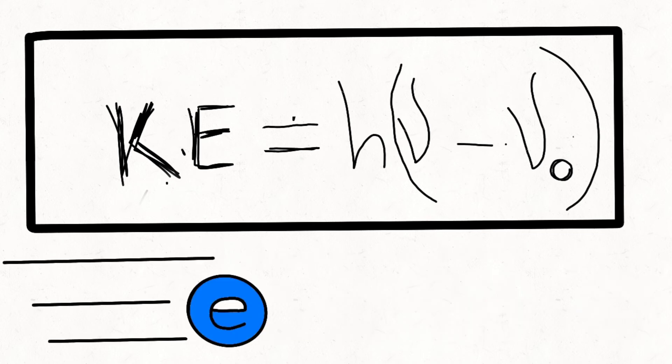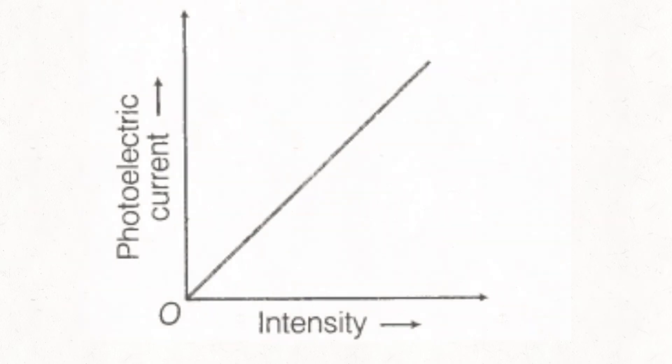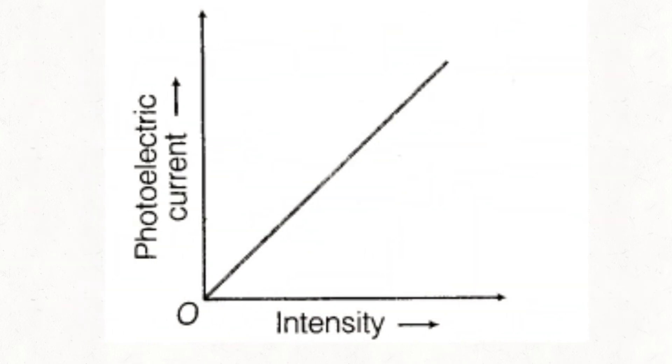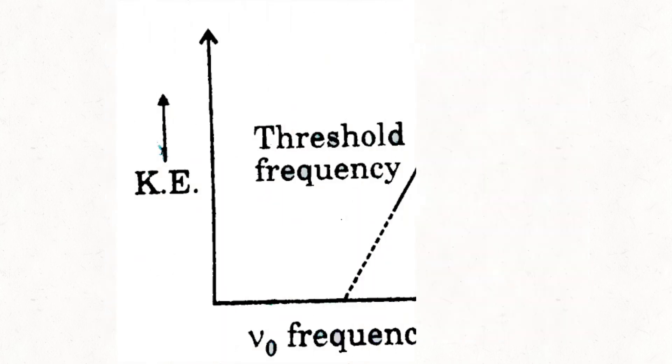But if incident frequency is greater than the threshold frequency, then increasing the intensity of light would only result in an increased number of ejected electrons. On the other hand, if you go on increasing the frequency of incident light above the threshold frequency, it would only result in increased kinetic energy of the electrons emitted.